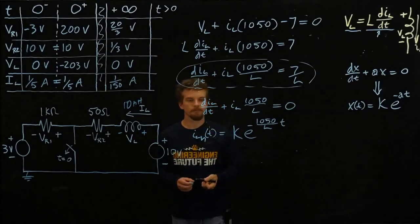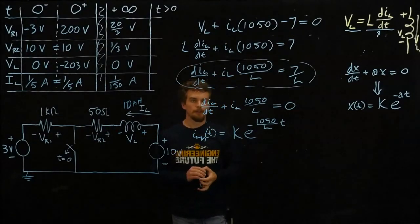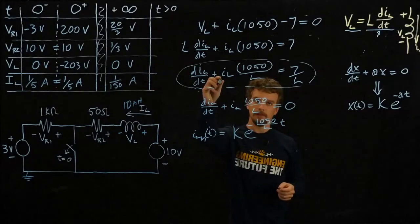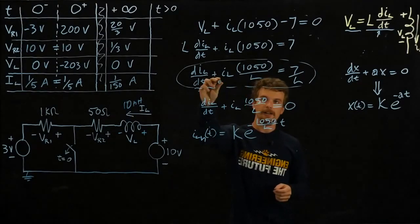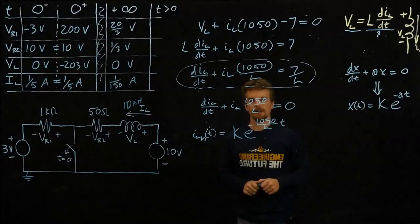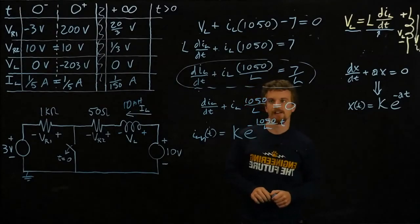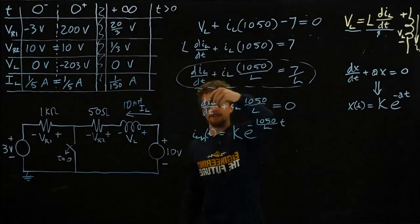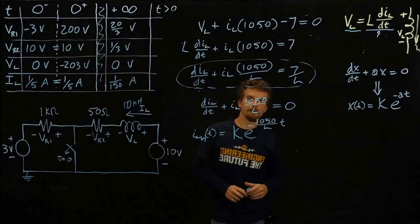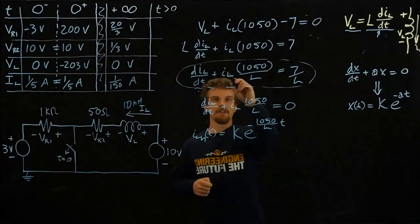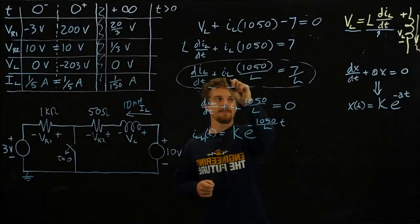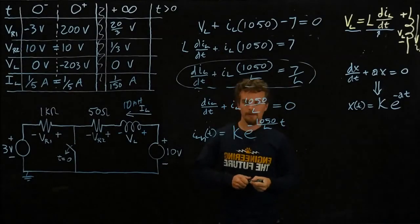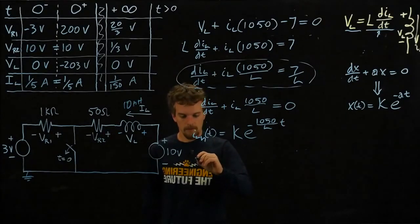Now our particular solution. What is our particular solution? Our particular solution is any value of IL that we could put into this equation and have it still be a valid equation. What if we put a constant value of IL in? We would see that this derivative term will go to zero because it would be the derivative of a constant, and then we could solve for some constant value to make this equal to this.